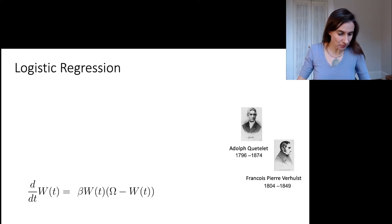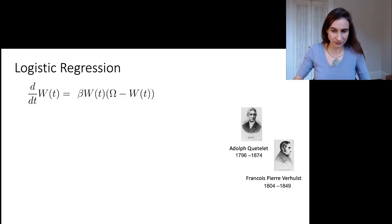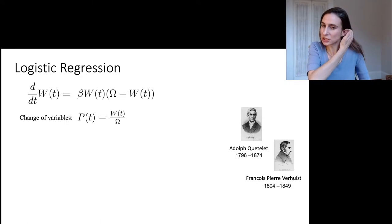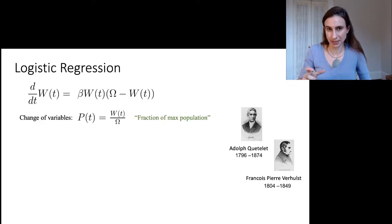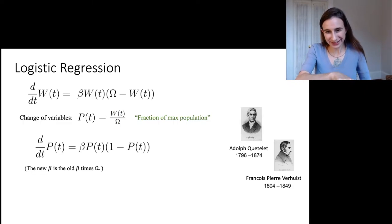They were really excited about this model and applied it to lots of different things. Let me change variables quickly to get it into a slightly different form. I'm taking the population and dividing it by its maximum, so P is the fraction of the maximum possible population. The new beta is the old beta divided by omega. Here's our new equation. As P(t) approaches one, the saturation limit, the growth of the population goes to zero.